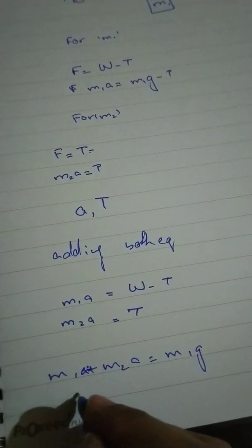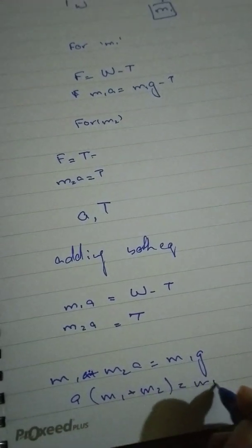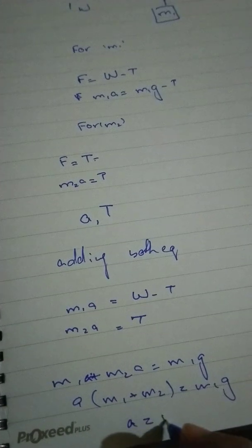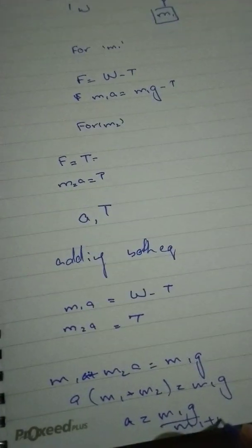Now, acceleration commonly, M1 plus M2 times A is M1 G. Acceleration is equals to M1 G upon M1 plus M2.